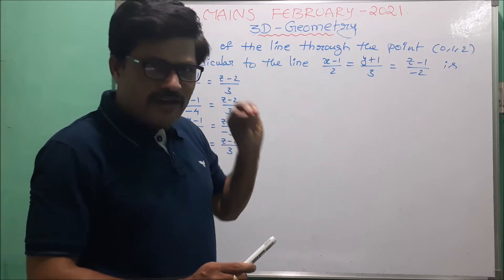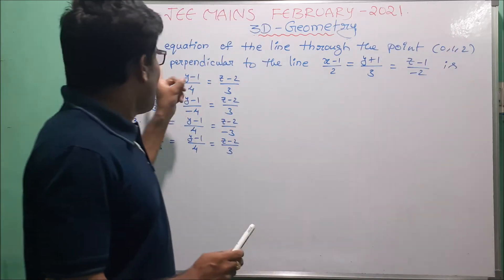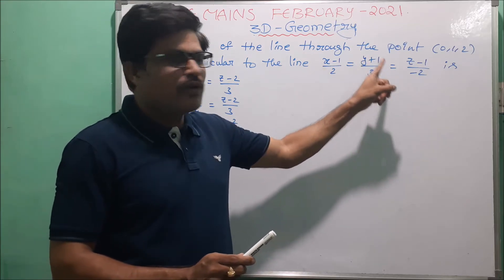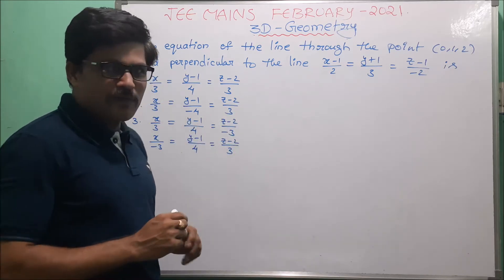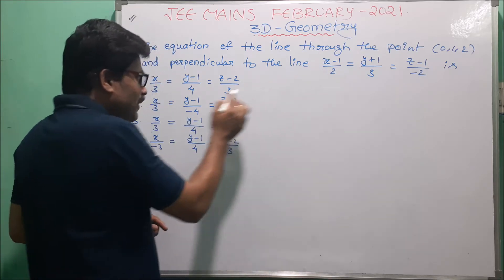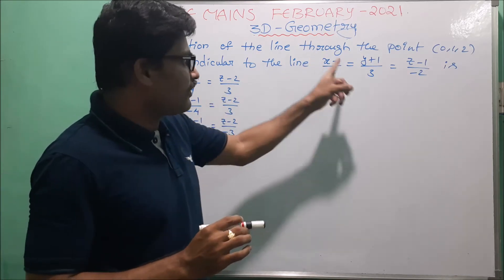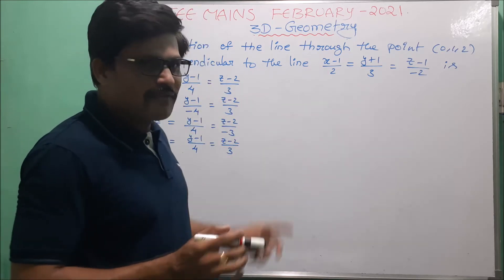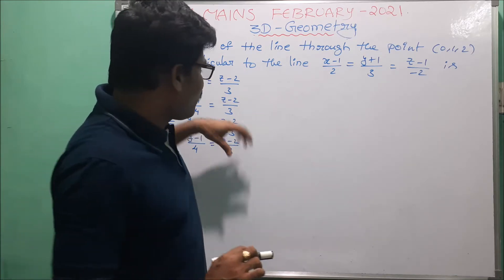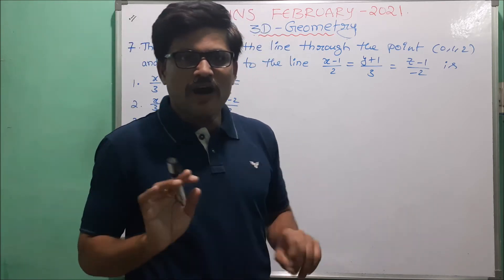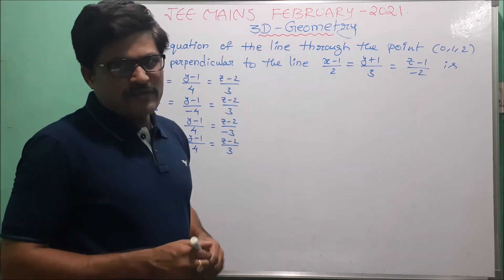To find the equation of the line in symmetric form, passing through point (0, 1, 2) and perpendicular to the given line. We go to options — this is one type of solution. This line is clearly perpendicular to the given options. We have to observe the sum of the product of direction ratios. The sum of the product of DRs of the given line and given options equals zero — that means the line is clearly perpendicular. This is method one.